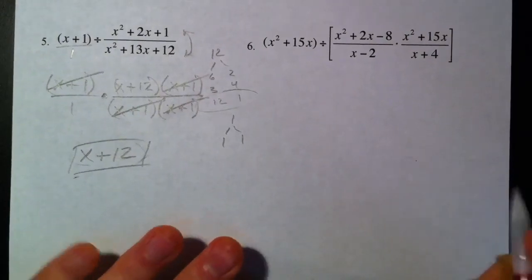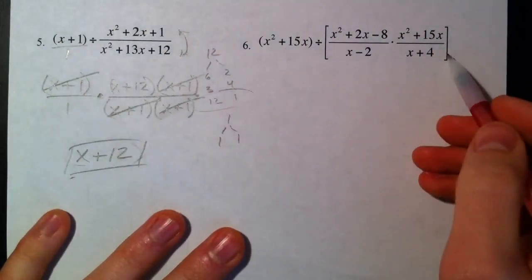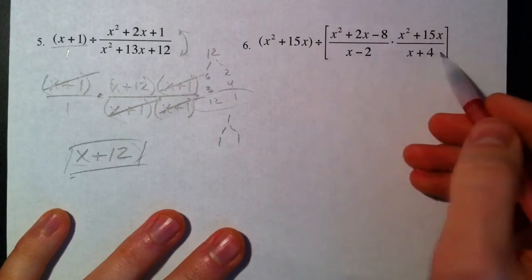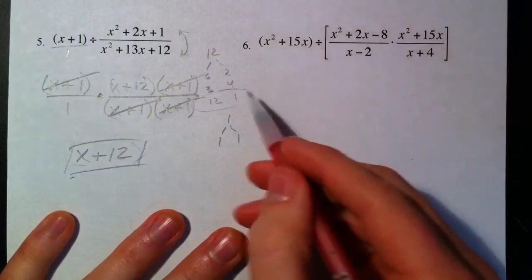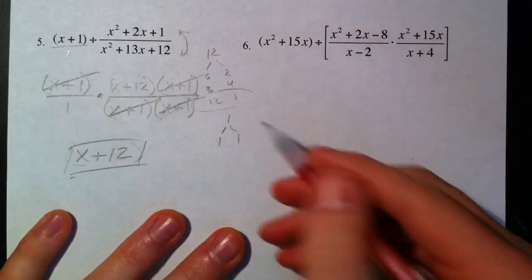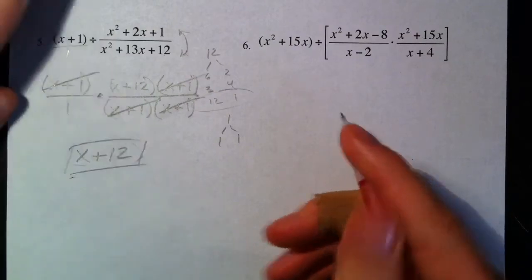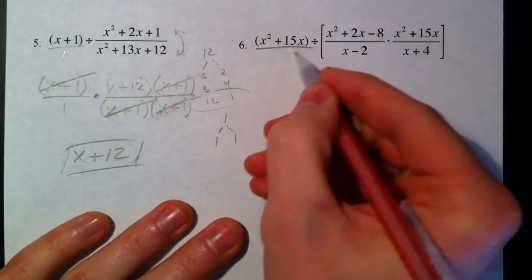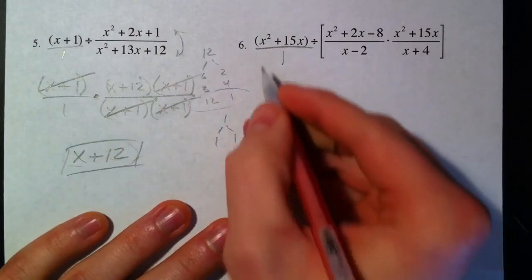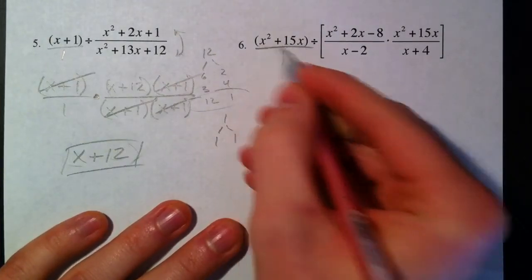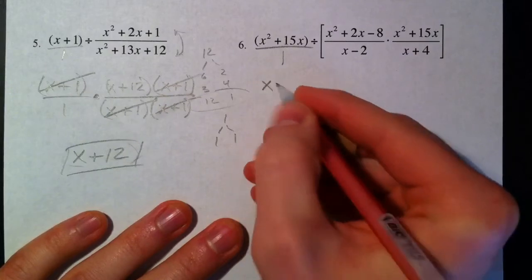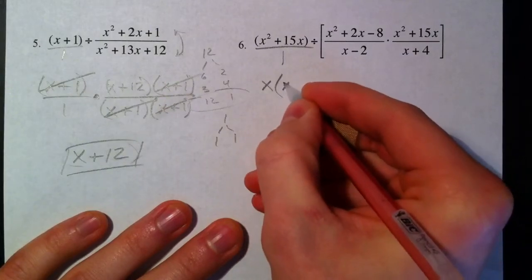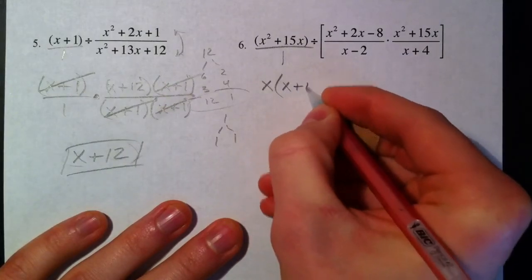All right, on to the last example. This looks really, really complicated, but if you take it one step at a time and change everything to multiplication and factor as you go, it's really not all that tricky—same concept though. So I'm going to put this over 1, just like we did. I'm going to factor that. It's got an X in both parts, and so we get an X times X plus 15.